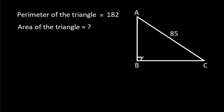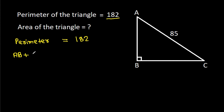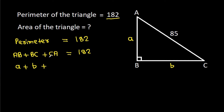In this video, we have been given a right angle triangle ABC where AC is 85 and the perimeter of the triangle is 182, and we have to find the area of the triangle. The perimeter is AB plus BC plus CA equals 182. Suppose AB is A and BC is B, then A plus B plus 85 equals 182.